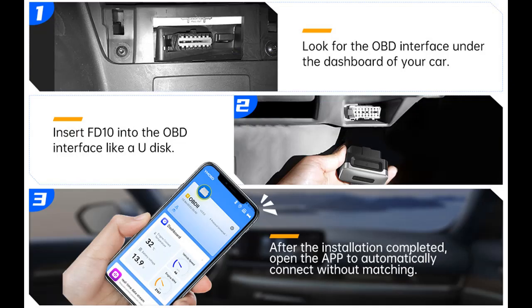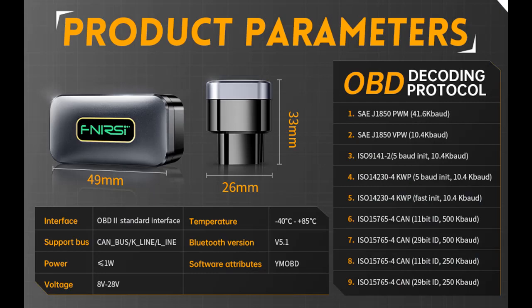Highlight Features or Overview Summary includes: the FNIRC FD10 OBD-II is a small tool to diagnose and check vehicle fault display light, monitor car sensors, and know vehicle running status in real time.